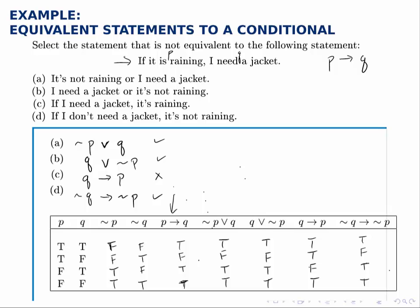The one that isn't equivalent is part C. If I need a jacket, it's raining. In other words, if we have an if-then statement, we can't flip it around necessarily and say if Q then P. That's called the converse of a statement and it's not necessarily true.